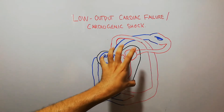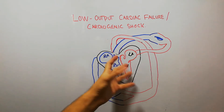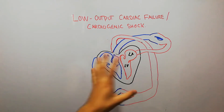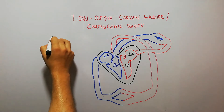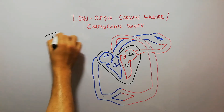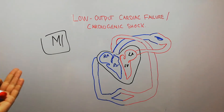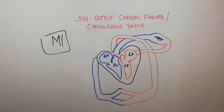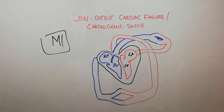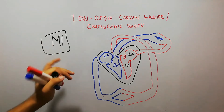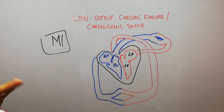What basically causes decreased pumping of the heart? There are many conditions, but the most important is myocardial infarction. After that there are conditions like cardiomyopathy, hemochromatosis, and many others which lead to a decrease in the pumping effectiveness of the heart. The most important is myocardial infarction, which occurs due to atherosclerosis — something discussed in our previous lectures.